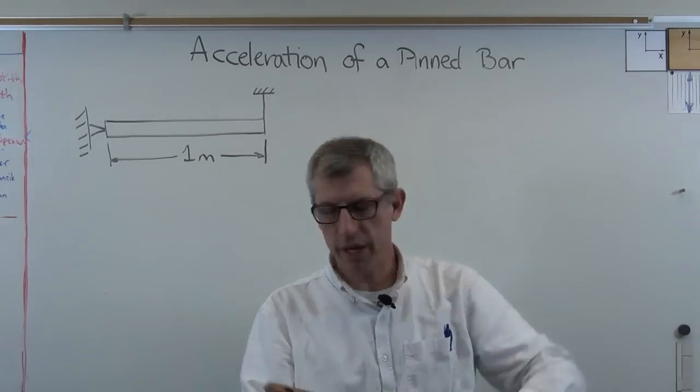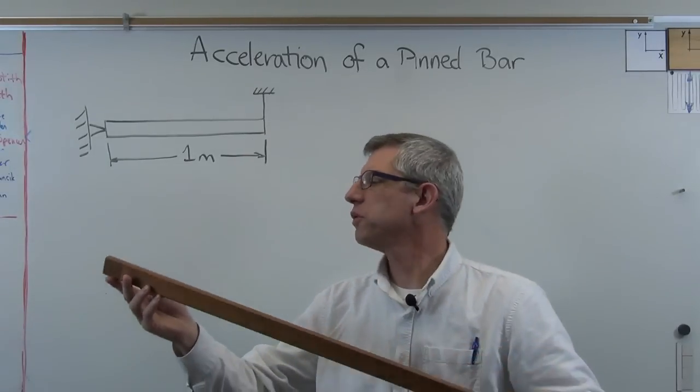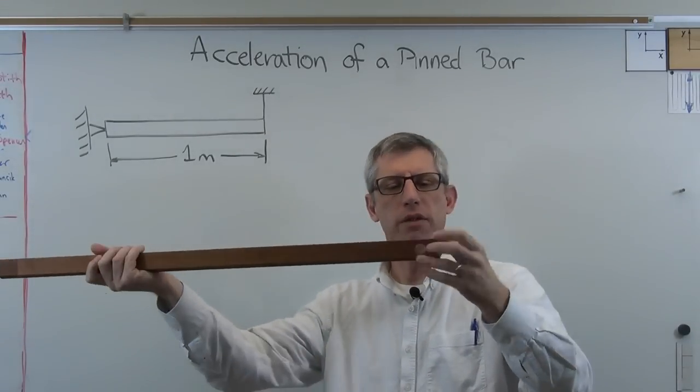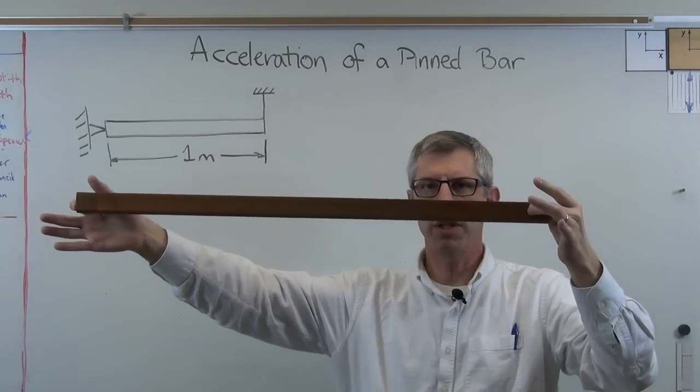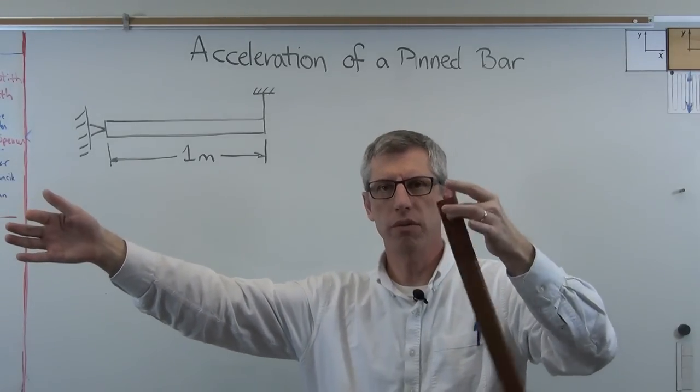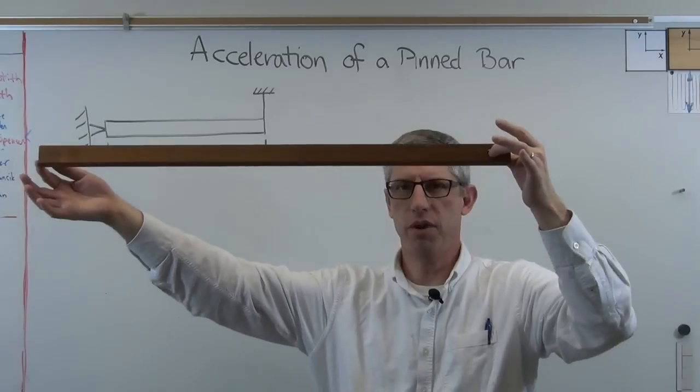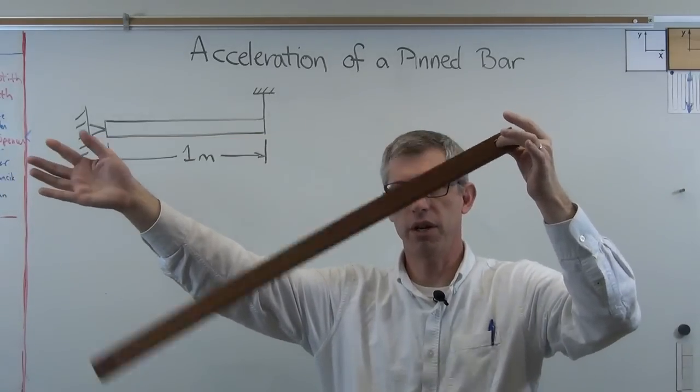I've actually got a bar here. This is actually a straight edge I use. But what I've got here is I've got a hole on this end. I'm going to stick my finger through there and make that a pivot, and I'm going to hold it at this end. When I let go, the bar drops. Obviously, it drops under the acceleration of gravity. Just let it go, and there it goes.